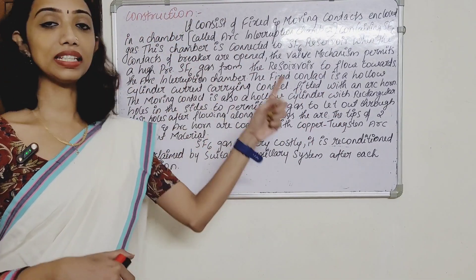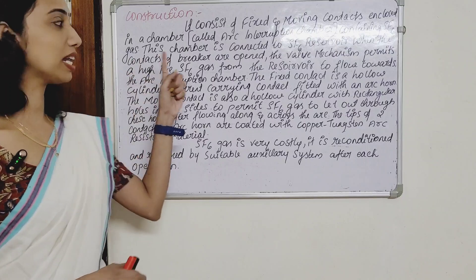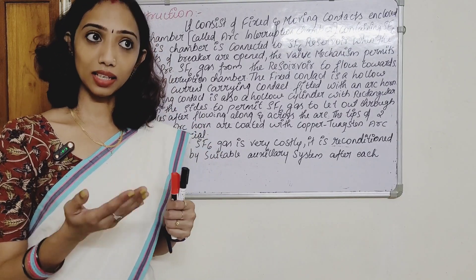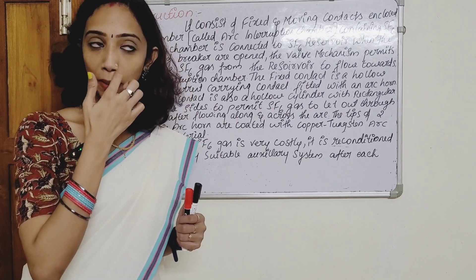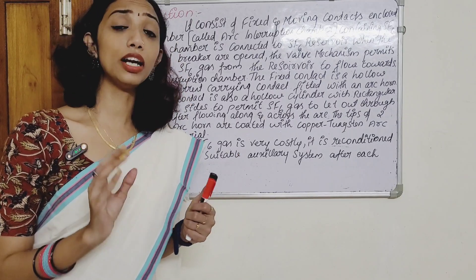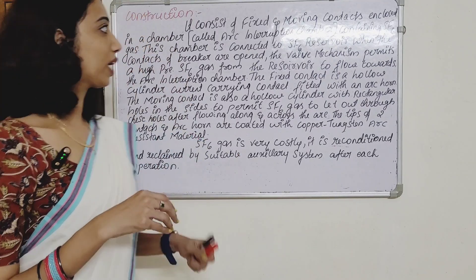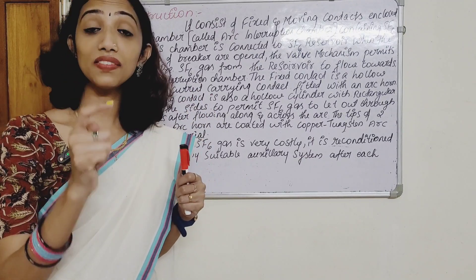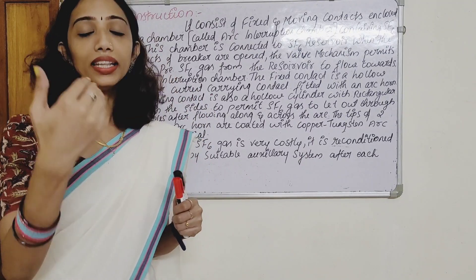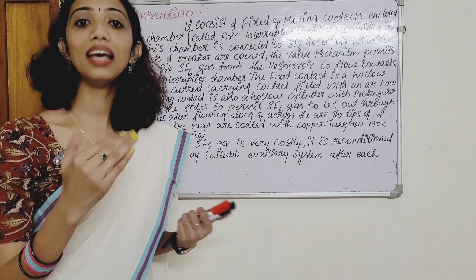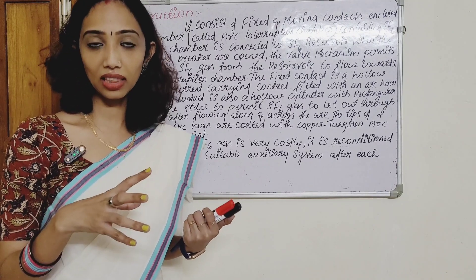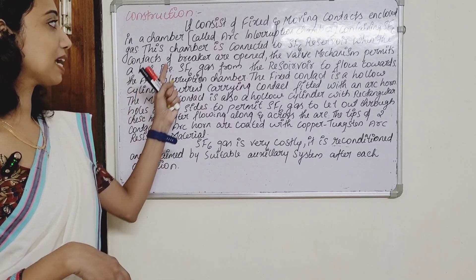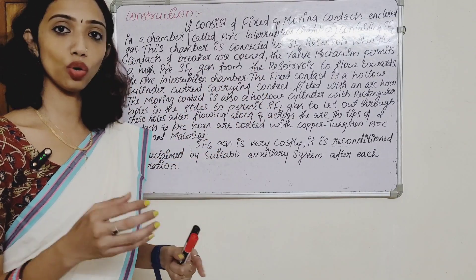It consists of fixed and moving contacts. The enclosed chamber is called the arc interruption chamber. The arc interruption chamber consists of SF6 gas, with an SF6 gas inlet. The chamber is connected to an SF6 reservoir.